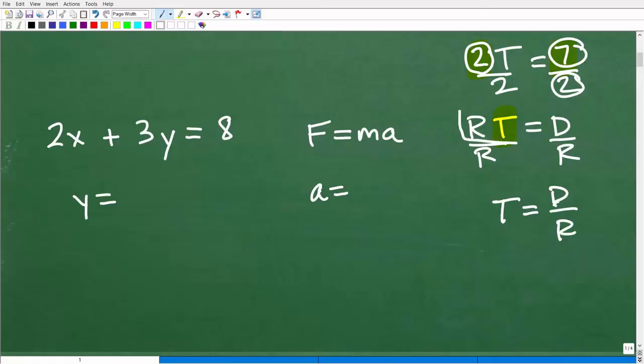So t, let me write this down here, is equal to d over r. So I rewrote this formula, rt, or rate times time is equal to distance, in terms of t, i.e., time is equal to distance over the rate. So you're not breaking the formula or equation, you're just rewriting it in a different way.